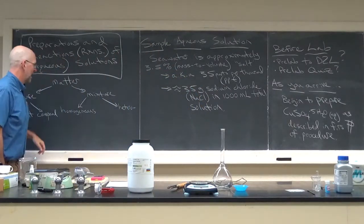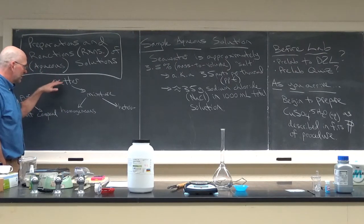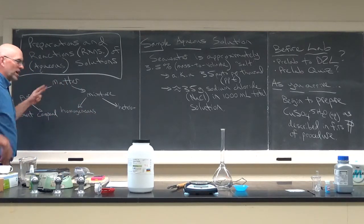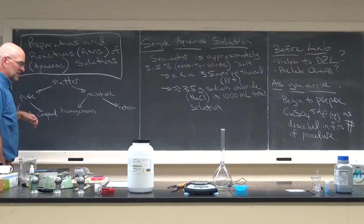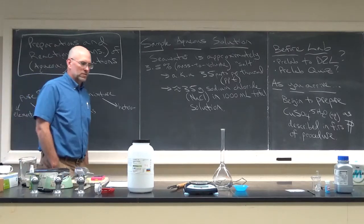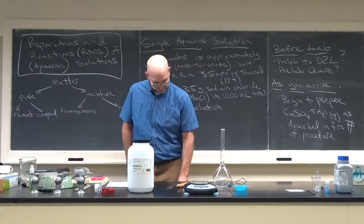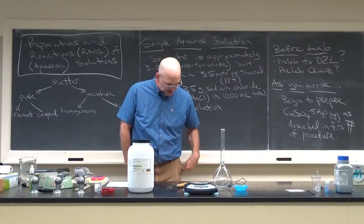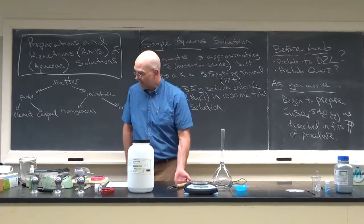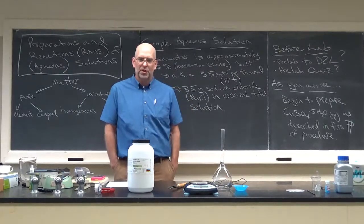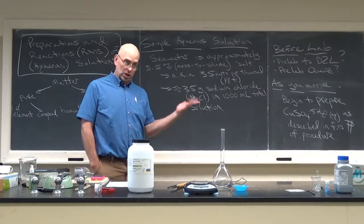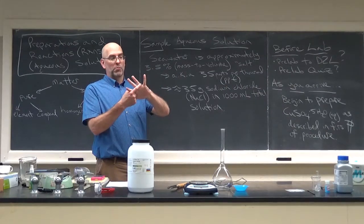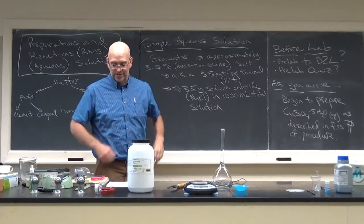To review some vocabulary: anything that has mass and takes up space is matter. Pure substances are either elements—from the periodic table—or compounds. Pure stuff is actually hard to come by. Pre-1982 pennies are nearly pure copper, aluminum foil is aluminum, and gold is gold—though my ring is actually a solid homogeneous mixture of metals.